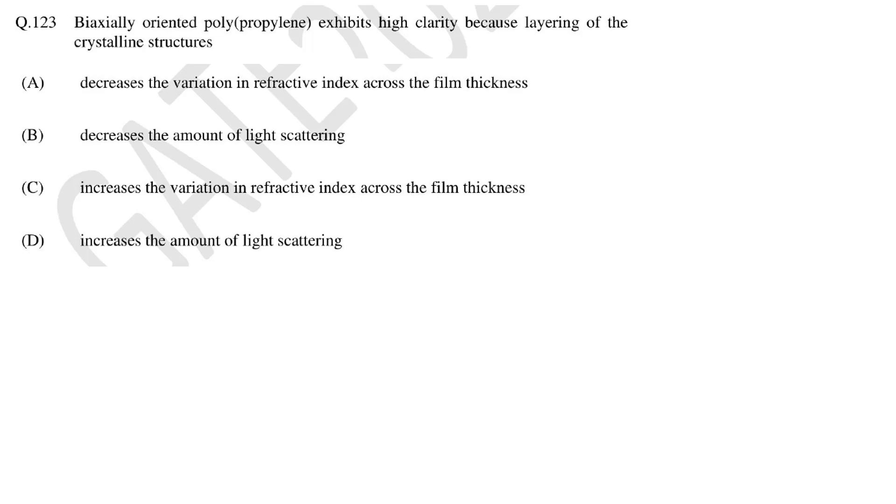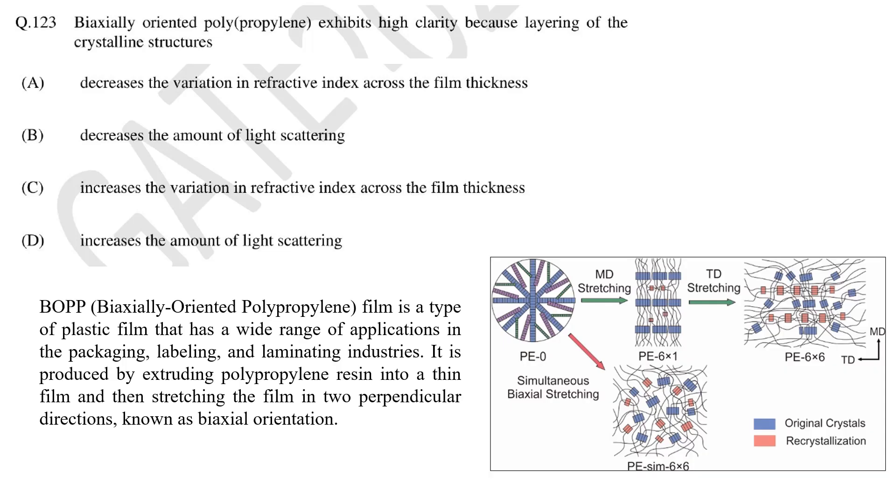In this question we need to tell the reason why layering of crystalline structure of biaxially oriented polypropylene film shows high clarity. Biaxially oriented film is a very important material for packaging, labeling and lamination application. Biaxially oriented film shows superior mechanical and optical properties. The films are uniform in both directions as we can see in the image. Crystals are small and uniformly distributed which leads to better clarity. The better clarity is due to reduced variation in refractive index and light scattering. So the answer is both A and B.